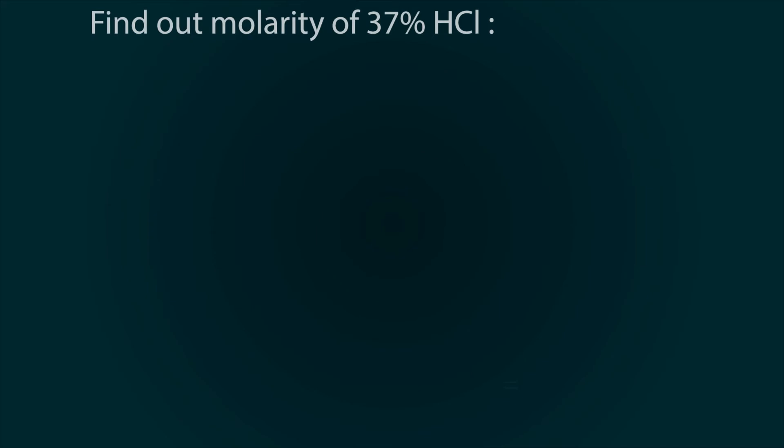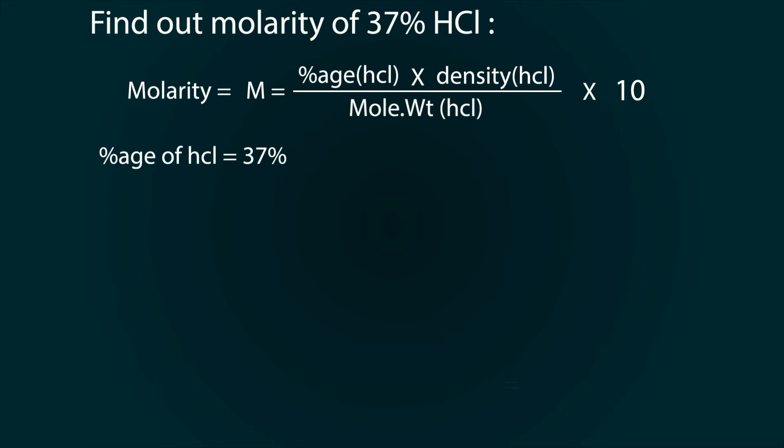First of all we will find out the molarity of 37% HCl. The formula of molarity is percentage of HCl multiplied by its density, whole divided by its molecular weight, and multiplied by 10. Here we have values as percentage of HCl is 37%, its density is 1.19, and its molecular weight is 36.5.